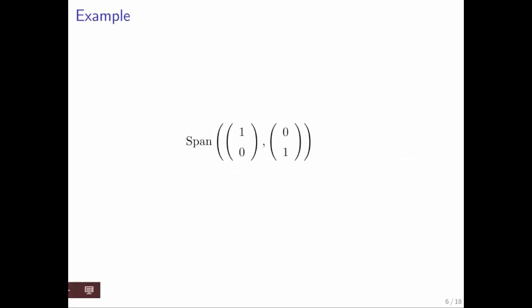So let's just do a couple of examples. What's the span of (1,0) and (0,1)? Well, that's R2, because the set of all vectors that you get from taking linear combinations of these two unit basis vectors is R2.